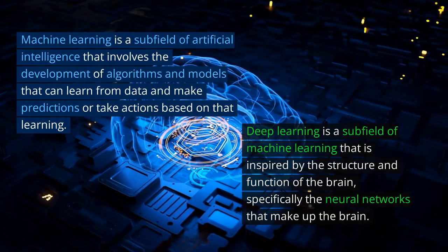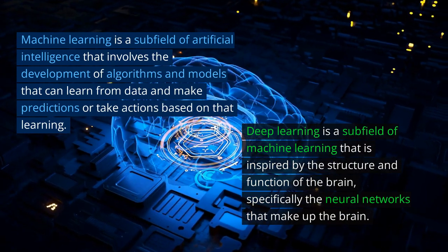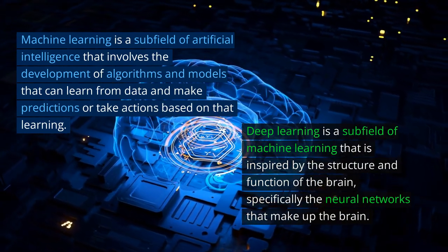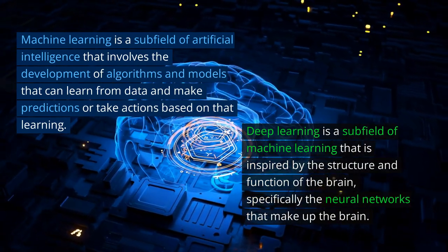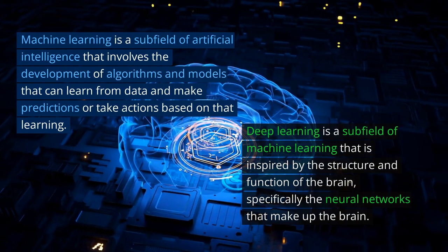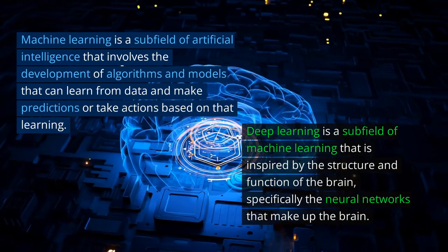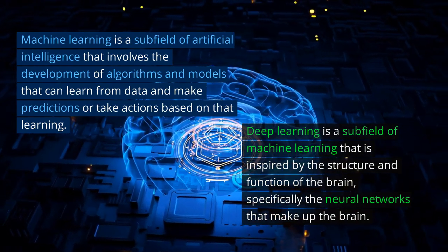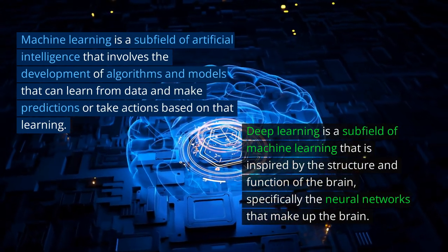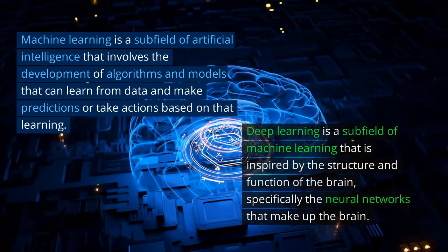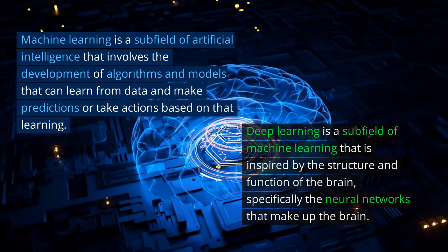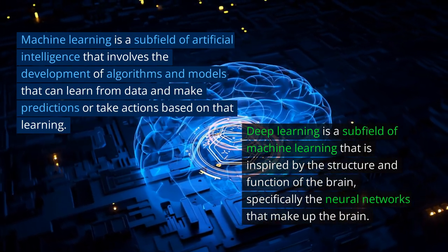Machine learning is a subset of artificial intelligence that involves training algorithms to make predictions or decisions based on data. Machine learning algorithms and models are designed to improve their performance over time as they are exposed to more data and are able to learn from it.